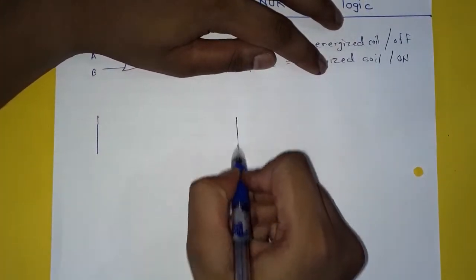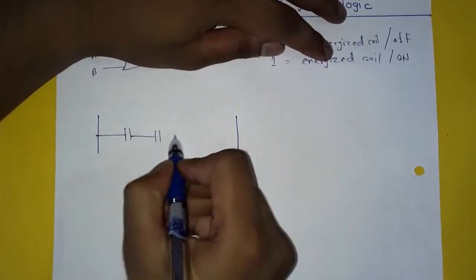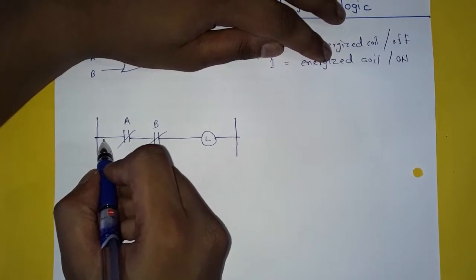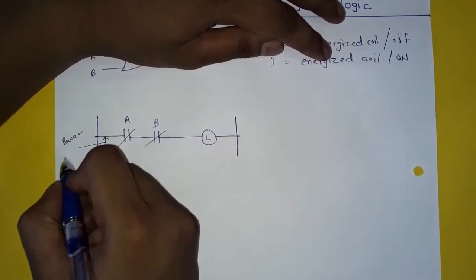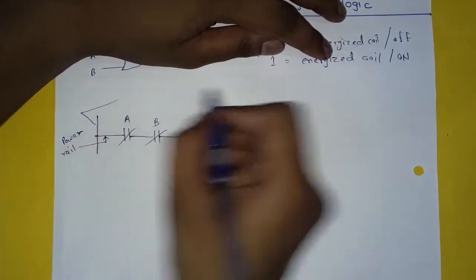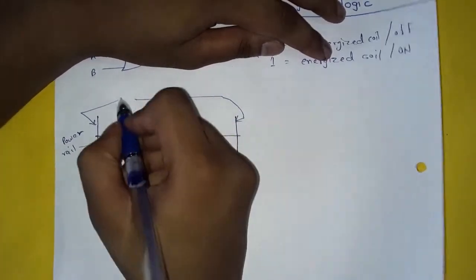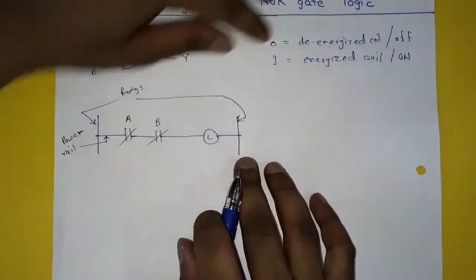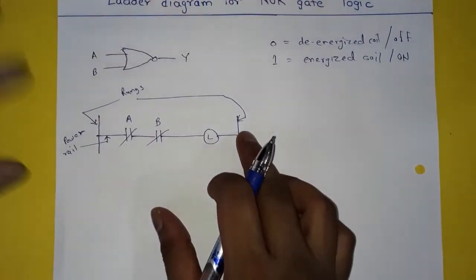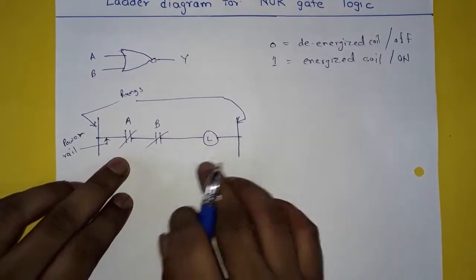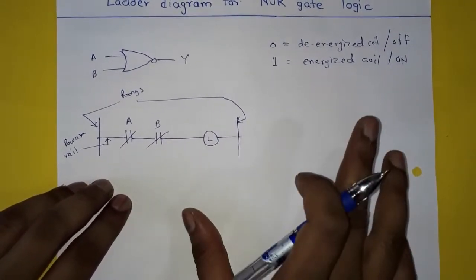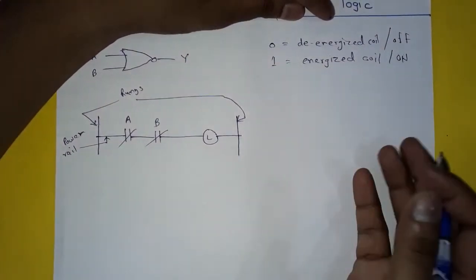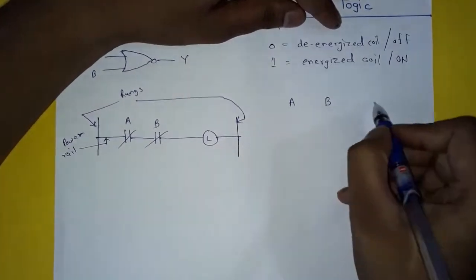Here these are the rungs. This is our lamp, this is A, this is B, and this is the power rail. In the NOR gate logic we always keep our switches or control relay in normally closed position and we arrange them in series connection. To understand how the NOR gate works in ladder diagram, we will see the truth table. Here this is A, this is B, and this is Y, that is our output.